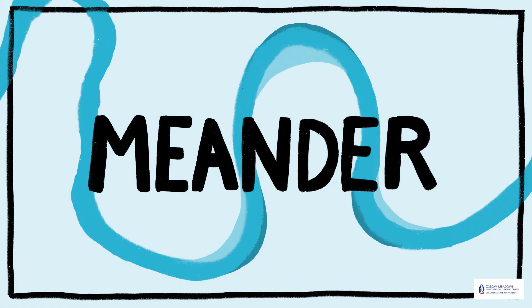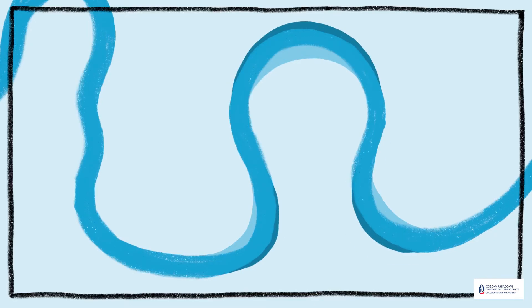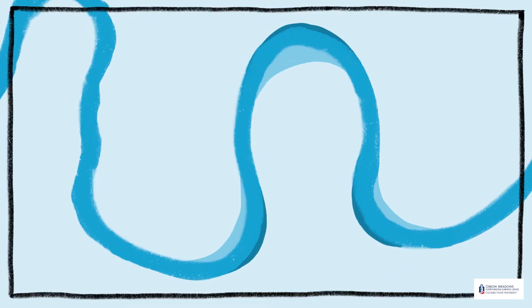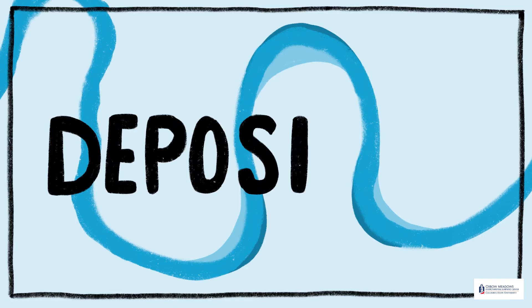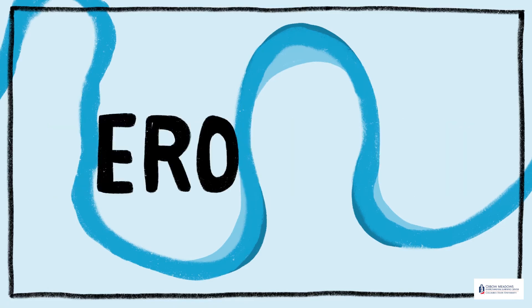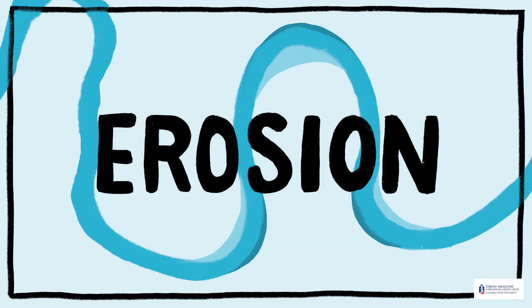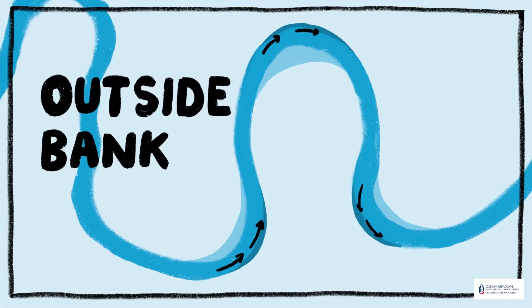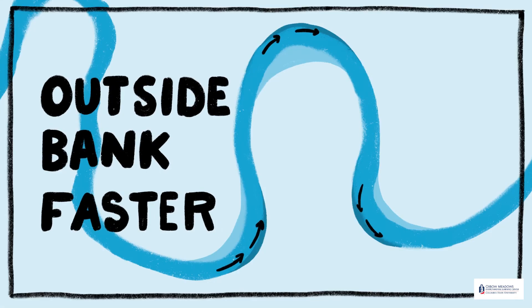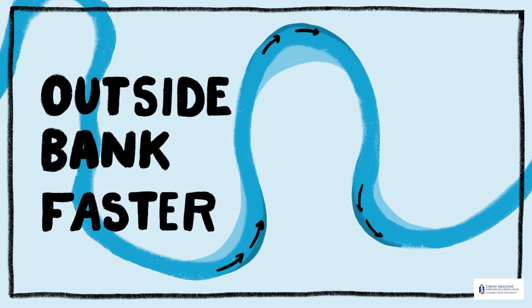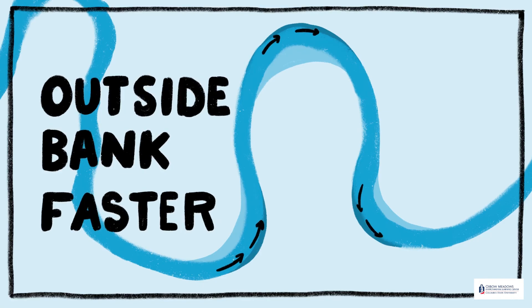The meanders of a river are formed by two key elements: erosion and deposition. Erosion occurs on the side of the riverbank as the water flows by and breaks down material on the side of the bank. This occurs on the outside of the bank where the water flows faster.